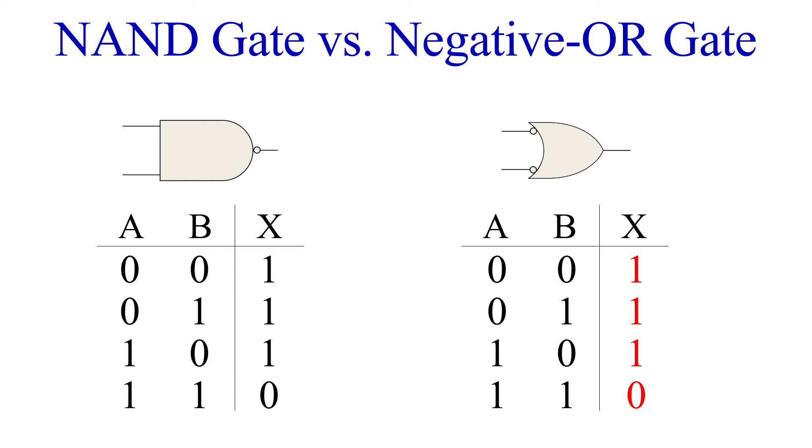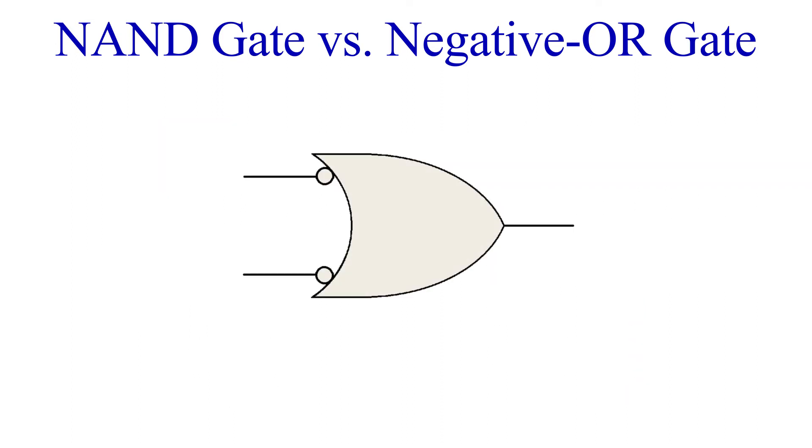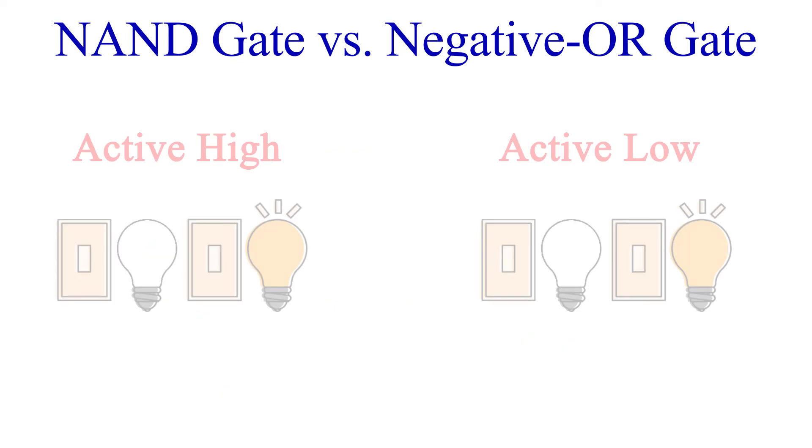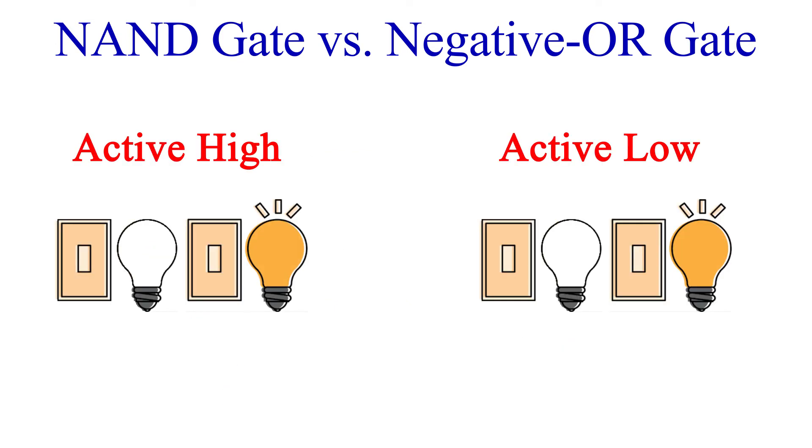So the question now becomes: why use one and not the other? The term negative OR is meant to express the fact that the inputs are in an active state when they are low. The NAND gate, like all other gates we have looked at up to this point, have inputs that enter an active state when they are high. So think of it like this: in an active high, the light turns on when a signal is present. However, in an active low...